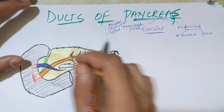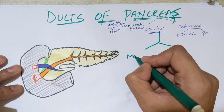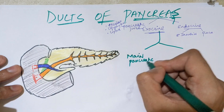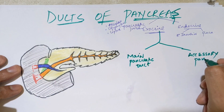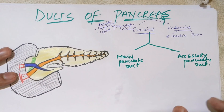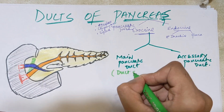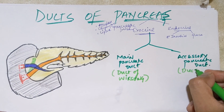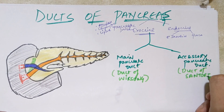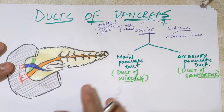Now let's move on to the ducts of the pancreas. From the basics, you know that the pancreas has two exocrine ducts: the main pancreatic duct and the accessory pancreatic duct. The main pancreatic duct is also called the duct of Wirsung, and the accessory pancreatic duct is also called the duct of Santorini — both named after scientists.